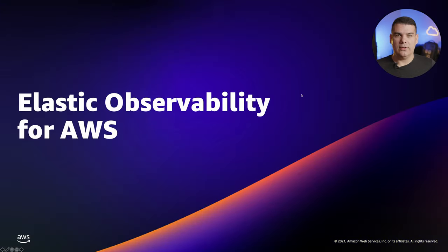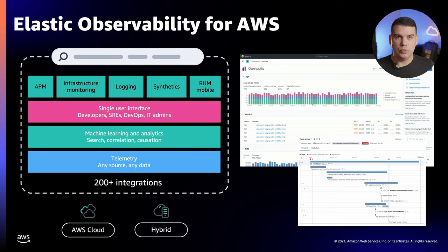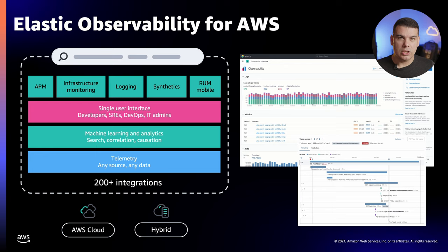Now let's discuss how Elastic Observability helps implement a unified observability strategy. It provides users with a single pane of glass that presents all signal types properly correlated and integrated within a single platform. This is a massive boost over strategies that rely on users handling different tools and interfaces. In this platform you can find tools known in the observability space — such as APM, Logging, Infrastructure metrics, and monitoring plus alerting — as well as tools unique to Elastic Observability, such as machine learning, causation analysis, real user monitoring, and much more.